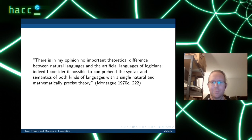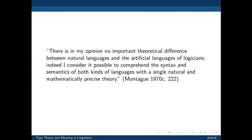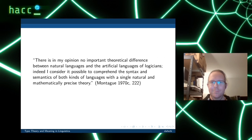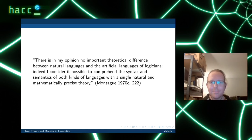The big influence of Montague was taking the theory of Alonzo Church's simply typed lambda calculus — an approach from logic — and making the very bold statement: 'There is, in my opinion, no important theoretical difference between natural languages and the artificial languages of logicians. Indeed, I consider it possible to comprehend the syntax and semantics of both kinds of languages with a single natural and mathematically precise theory.' That's a really bold statement, because programming languages are very small and well-defined compared to what we can express in natural languages.